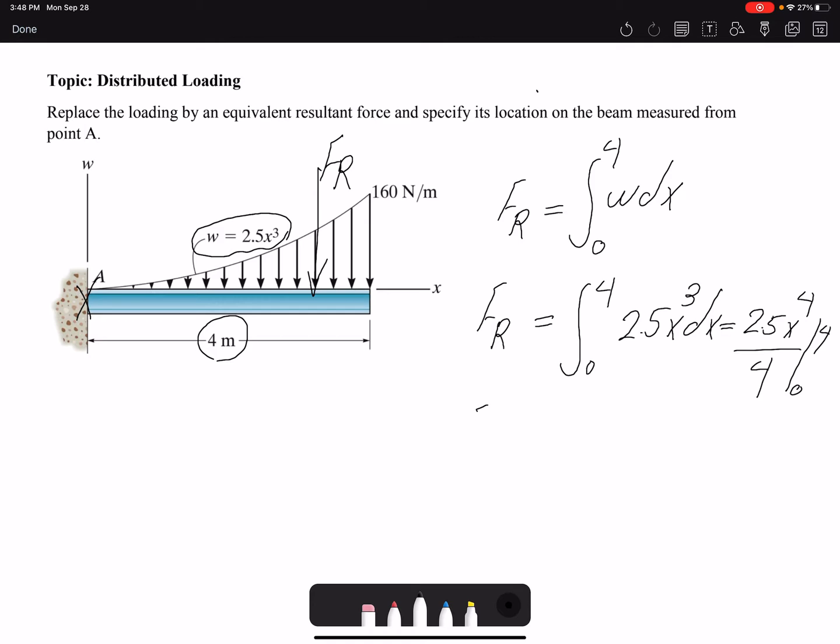So FR would be 2.5 times 4 to the power of 3, because I divided by 4 as well, so we get 160 Newtons. So that's the magnitude of our resultant force. Now we want to know where it's acting.